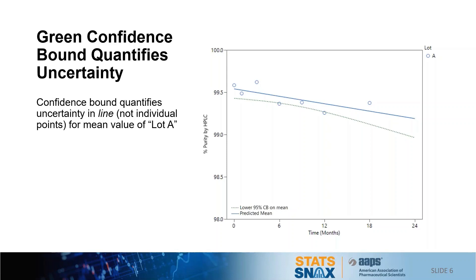I've estimated the mean regression line for lot A based on the information shown in the plot. The regression line is extrapolated to 24 months, which is six months beyond the last time point tested. This line says that my best guess, based on the information I have to date, puts the mean at around 99.3% at 24 months.